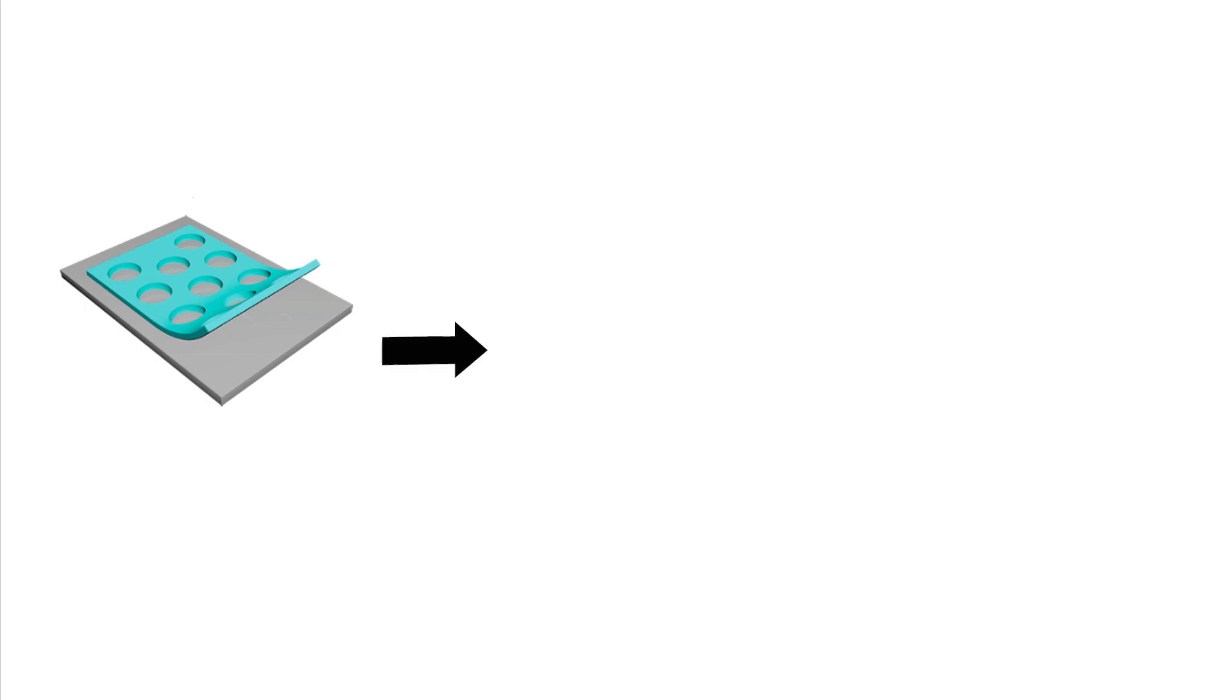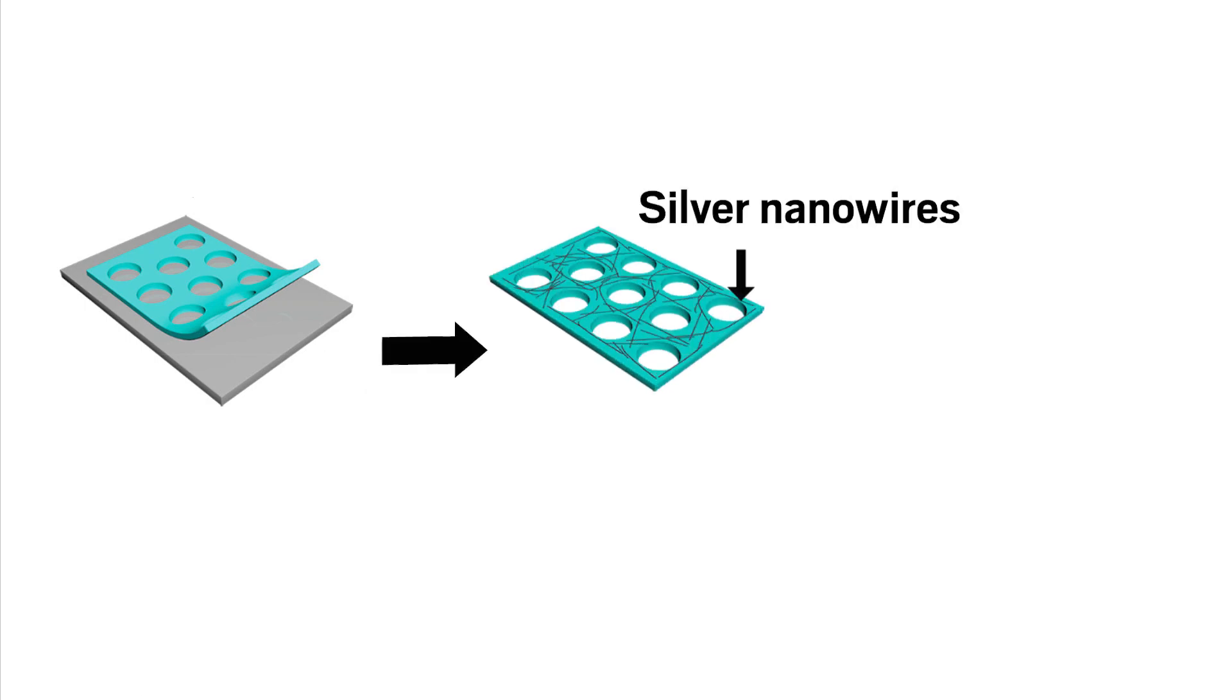Finally, the film is dipped inside a silver nanowire solution and heat pressed under high pressure. This last step embeds the nanowires into the polymer, which is key for the film's overall stability.